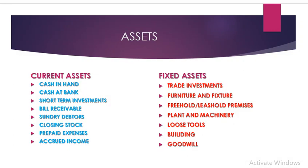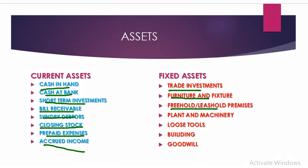Examples of current assets include: cash in hand, cash at bank, short-term investments, bills receivable, sundry debtors, closing stock, prepaid expenses, and accrued income. Fixed assets include long-term investments, furniture and fixtures, freehold or leasehold premises, plant and machinery, building, loose tools, and goodwill. Fixed assets could be tangible — things we can see, touch, or feel, like furniture, land, plant and machinery — or intangible assets such as goodwill, patents, trademarks, and copyrights.